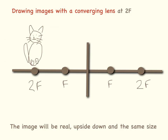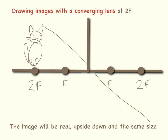Now I've moved Primrose along a bit — she is at 2F, which is just twice the focal length. Drawing from the top of Primrose's head through the middle of the lens, then from the top straight across and down through the focus point. This time the image is still upside down, it is the same size, and it's going to be a real image.